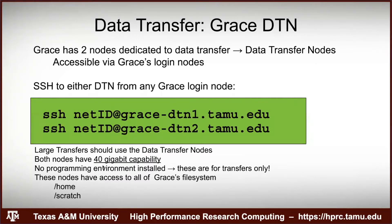The DTNs will eventually have a 40-gigabit connection, though we're still installing that. The big thing is there's no 60-minute process limit on the DTNs, so you can start a large data transfer and let it run. These nodes don't have programming environments — no compilers or libraries — because they're strictly for transferring files, not running or compiling code.